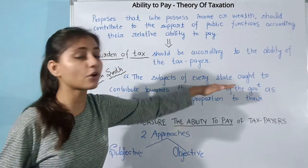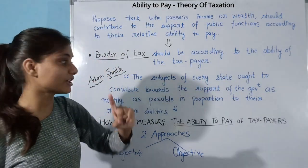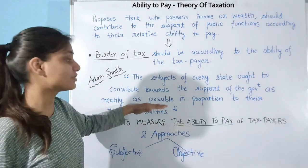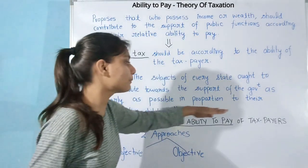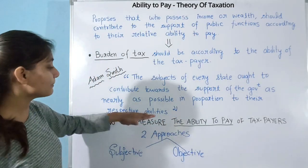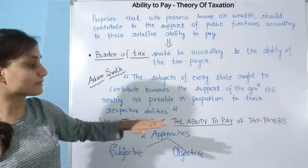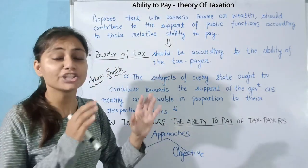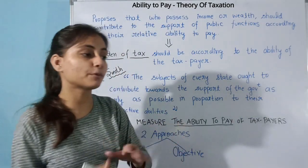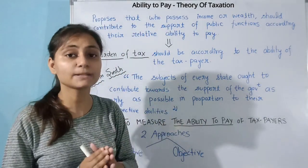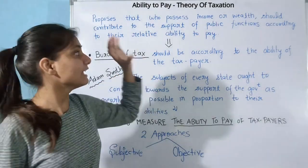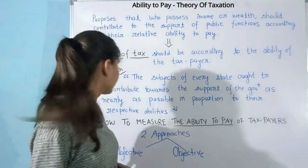As nearly as possible, in proportion to their respective abilities — meaning in the proportion of your ability to pay tax, you should pay tax in that proportion. So Adam Smith also validates this theory in his own way.